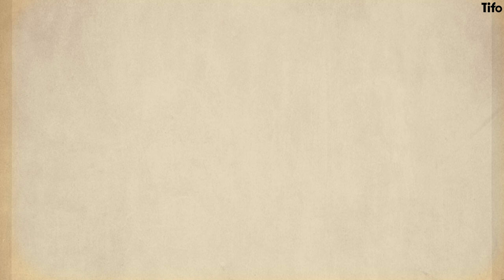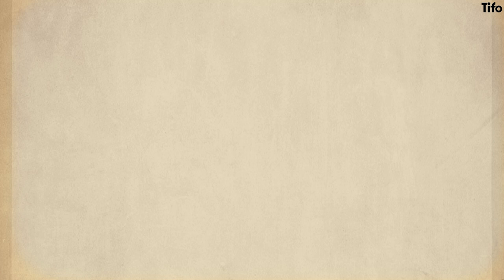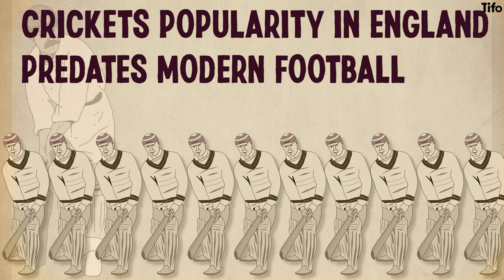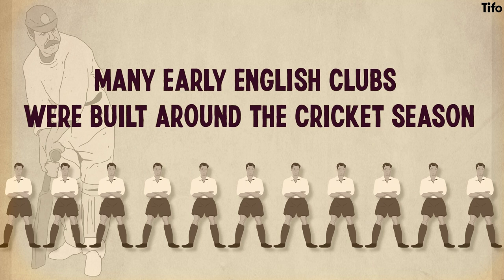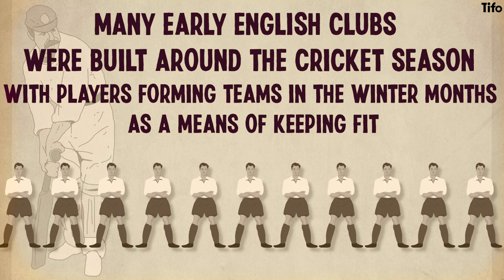There are two plausible explanations. One claims cricket as its inspiration. The sport's popularity in England predates modern football, and one theory is that eleven players in a cricket side became eleven in a football team. This is particularly plausible given cricket's success, but also because many early English clubs were built around the cricket season, with players forming teams in the winter months as a means of keeping fit. Most likely they played with eleven because that's how many players they had.